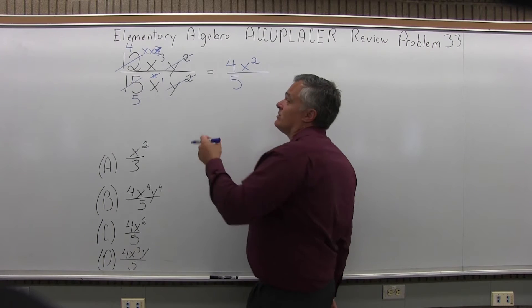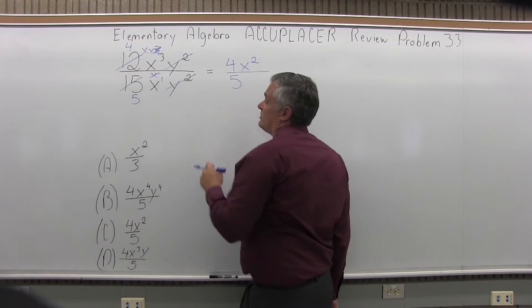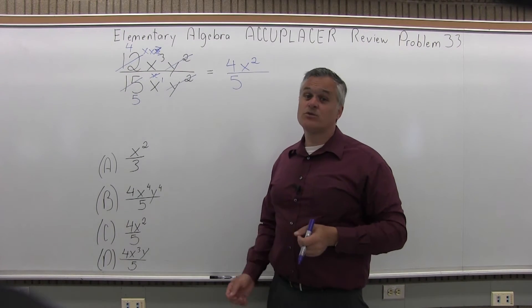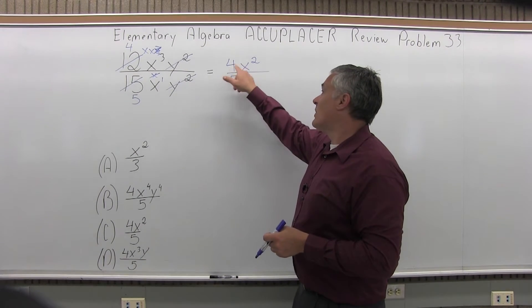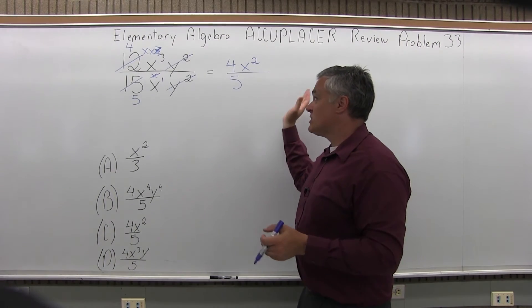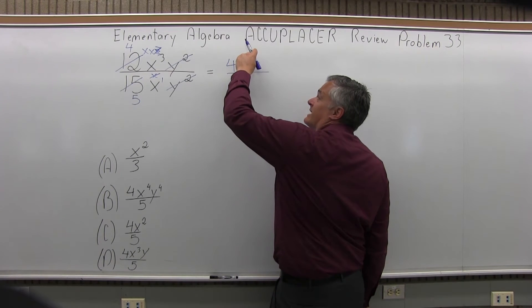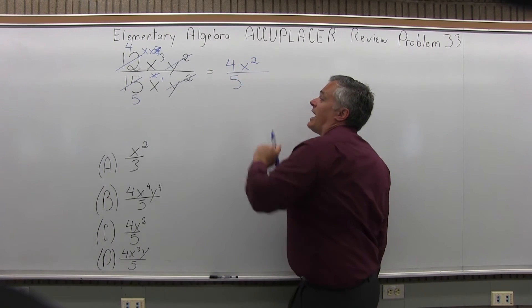Now, if you want to do that, subtract the exponents when you have the same base, it would be y to the 2 minus 2, which is y to the 0, which does reduce to 1, so it would be 4x to the second times 1 in the numerator if you want. But we can just let them cancel. So my answer is 4x to the second in the numerator and just the plain old 5 in the denominator.